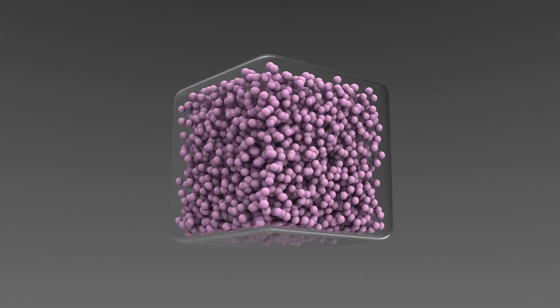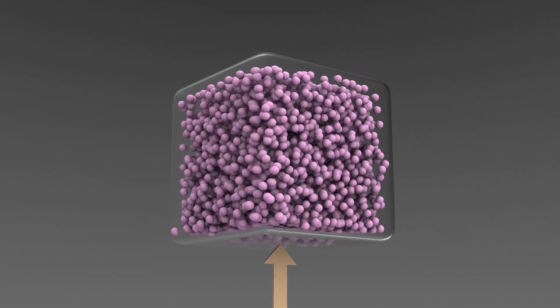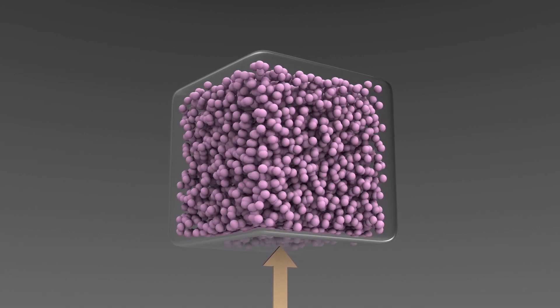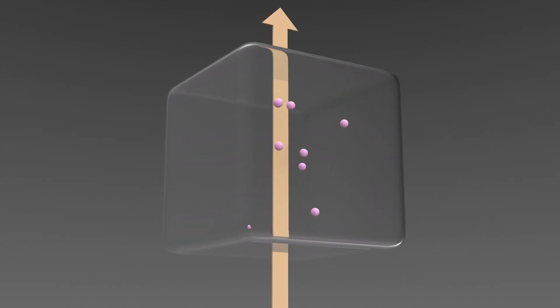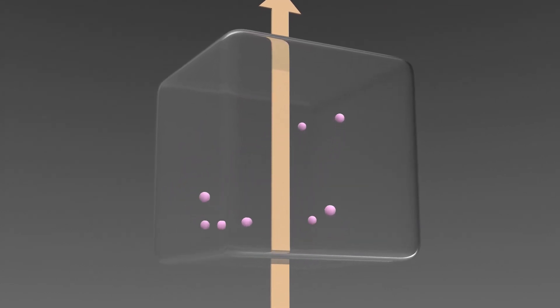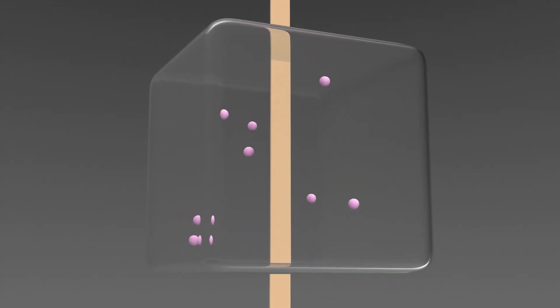Gas is evacuated from the interior of the equipment, and the number of gaseous molecules that can become obstacles is reduced by creating an environment that allows evaporation particles to fly as desired. This makes it possible to create a very uniform thin film.